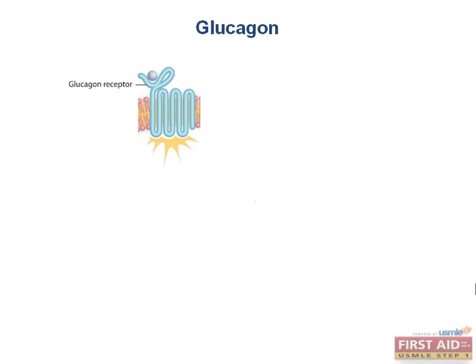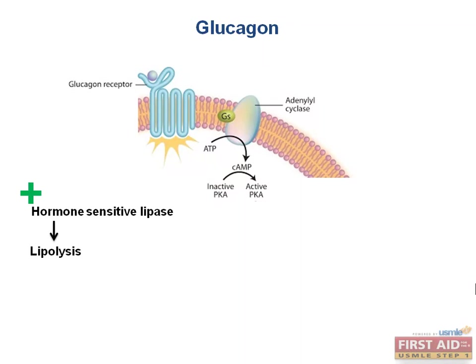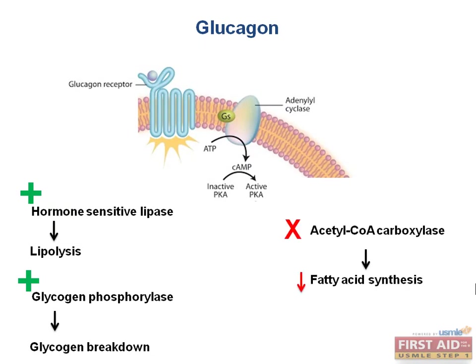Glucagon binds to its receptor, which stimulates adenylyl cyclase, leading to increased levels of the second messenger cyclic AMP, which activates protein kinase A. The downstream effects are: one, stimulation of hormone-sensitive lipase, increasing lipolysis; two, phosphorylation of glycogen phosphorylase, stimulating gluconeogenesis; and three, PKA phosphorylates acetyl-CoA carboxylase, preventing conversion of acetyl-CoA to malonyl-CoA, which effectively decreases fatty acid synthesis and makes acetyl-CoA available for ketone synthesis.